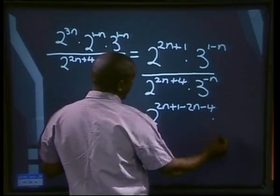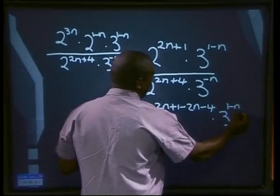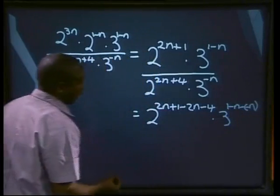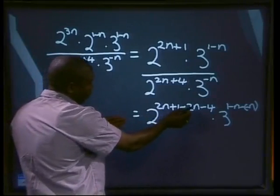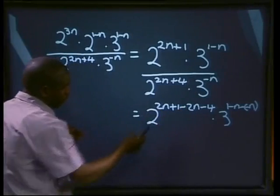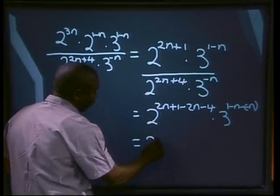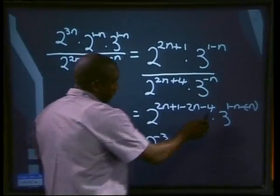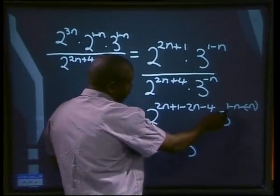Multiplied by 3 to the power of 1 minus n, take away minus n. That will give us the 2n and minus 2n will give us 0. 1 take away minus 4 will give us 2 to the power of minus 3.